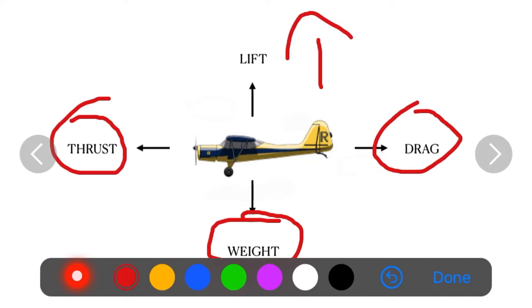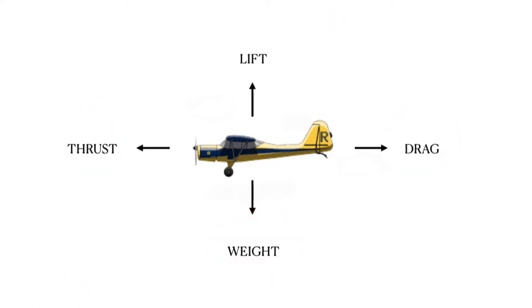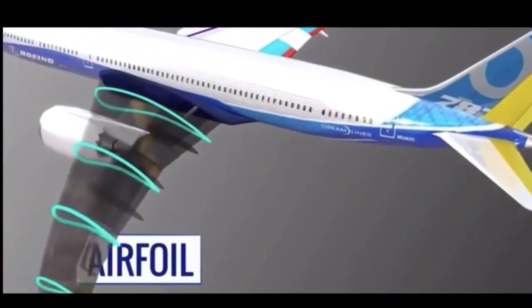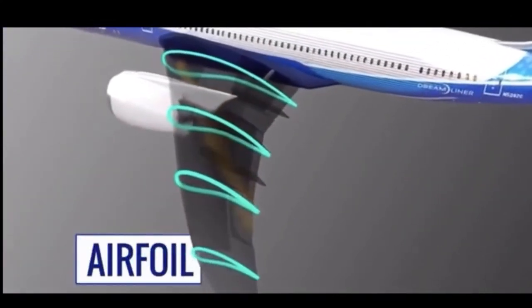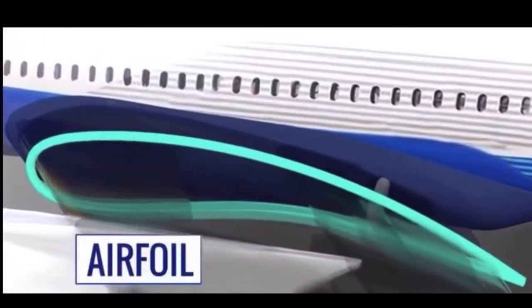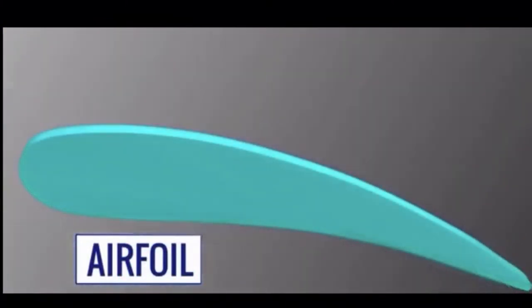Next let us look at the shape of a wing and how the wing generates lift. The cross section of the wing is in the shape of an aerofoil, which when passed through a fluid like air produces more lift compared to drag.